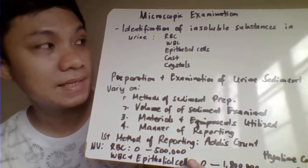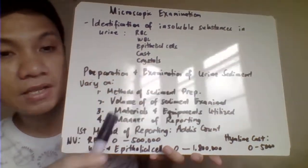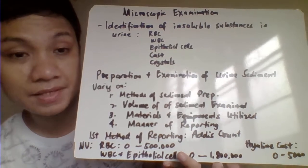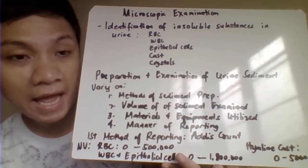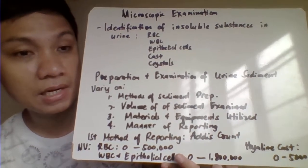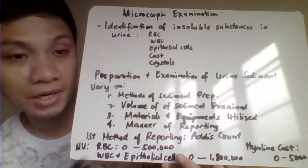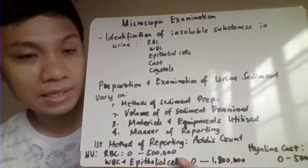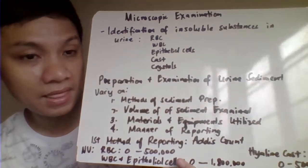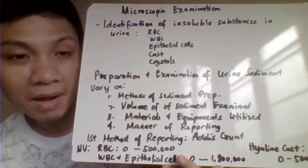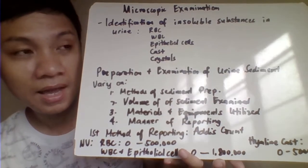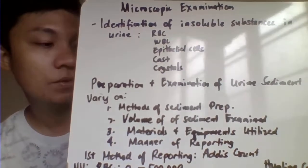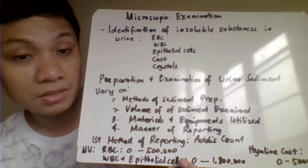Identification of substances like blood cells — your RBC or WBC — and the different types of epithelial tissues like squamous epithelial tissues, transitional epithelial tissue, and renal tubular epithelial tissues, and even the different forms of casts and crystals requires skill in identification. You really need experience to identify them, because how you report and identify those sediments always matters and could lead to errors in interpretation of the patient's result.